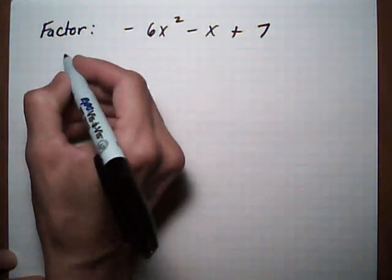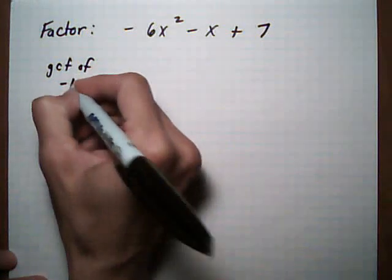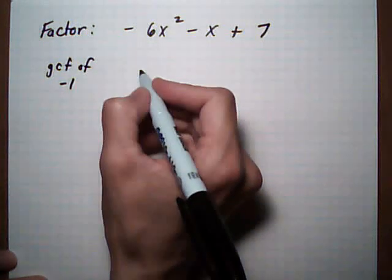What we're going to do is factor out a GCF, greatest common factor, of minus 1, or just a negative sign.